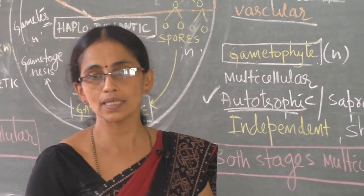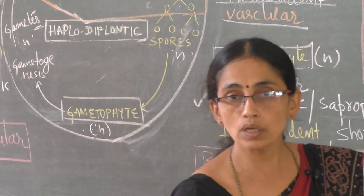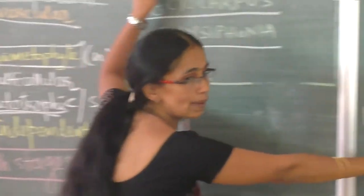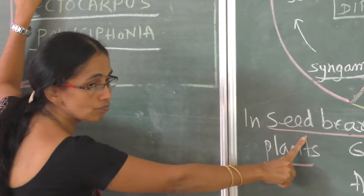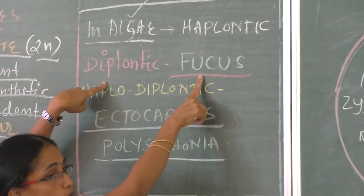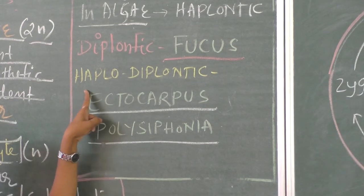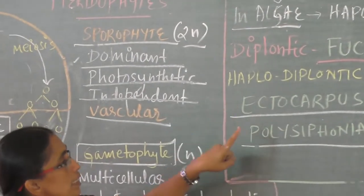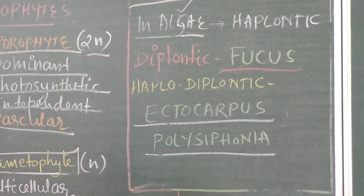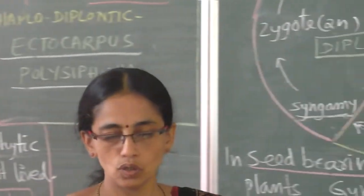Final summary of exceptions: Haplontic life cycle is seen in algae — Spirogyra, Volvox, and Chlamydomonas. Diplontic life cycle is seen in seed-bearing plants — angiosperms and gymnosperms — and also in the alga Fucus. Haplodiplontic is seen in bryophytes and pteridophytes, and also in two algae: Ectocarpus and Polysiphonia.